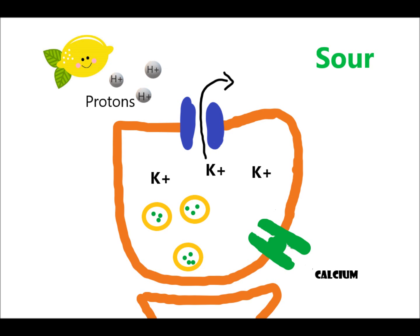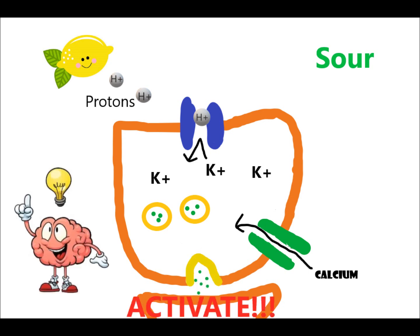However, after you taste something sour, protons can get stuck and block these channels. This prevents potassium from leaving the receptor. This changes the conditions inside the cell and causes the calcium channels to open. Then, as you've seen before, our influx of calcium causes the neurotransmitter sacs to fuse and release neurotransmitter to warn the brain that you're eating something acidic or simply just sour.